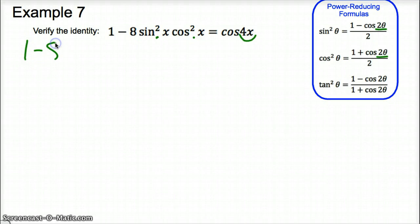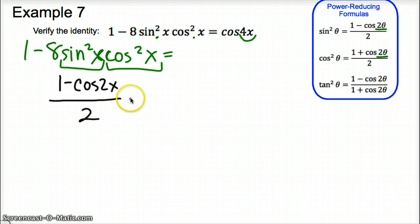So I'm going to take 1 minus 8 sine squared x cosine squared x. And I'm going to start with changing these out by the power reducing formulas. So sine squared x will change to 1 minus cosine 2x, of course, over 2. And cosine squared x will change to 1 plus cosine 2x over 2. And I still have my minus, my 8 in front, and my 1 minus that quantity. So let's simplify this out, see where we are, and see how close we are to our goal.